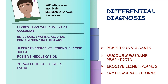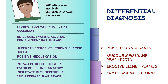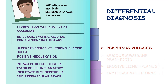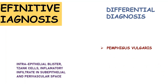Finally, the presence of intraepithelial blisters and Tzanck cells from the histopathology report brings us closer to our final definitive diagnosis, and we remove mucous membrane pemphigoid, lichen planus, and erythema multiforme from our list, confirming pemphigus vulgaris.